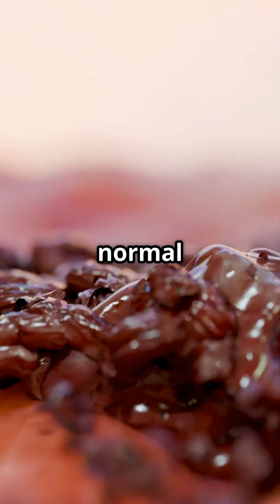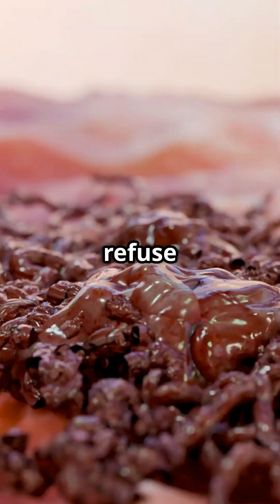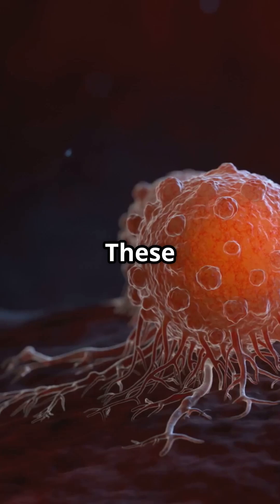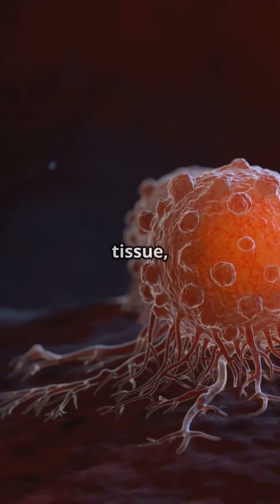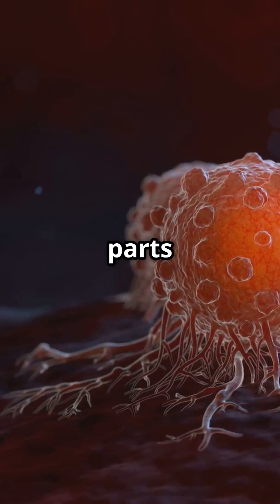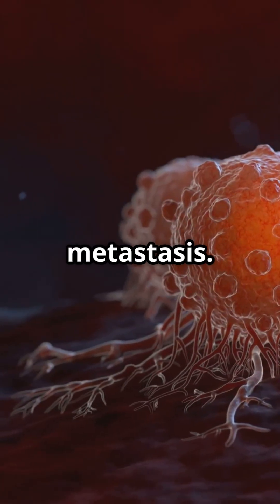So, what is cancer? At its core, it's when normal cells get DNA mistakes but refuse to self-destruct. These rogue cells start growing out of control, invading healthy tissue and sometimes spreading to other parts of the body, a process called metastasis.